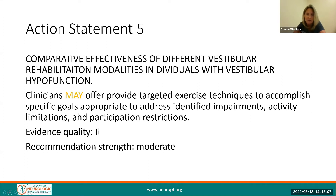Action Statement 5 is the first time the evidence quality is only at a Level 2, while the recommendation strength is moderate. Clinicians may offer targeted exercise techniques to accomplish specific goals that are appropriate to address identified impairments, activity limitations, and participation restrictions.